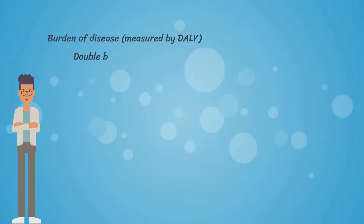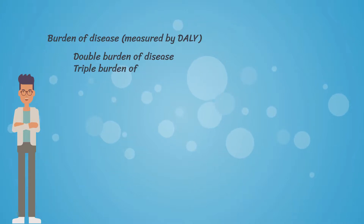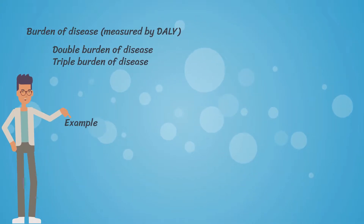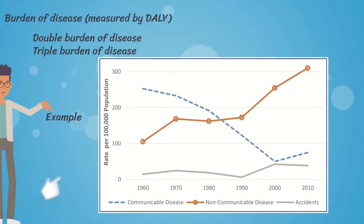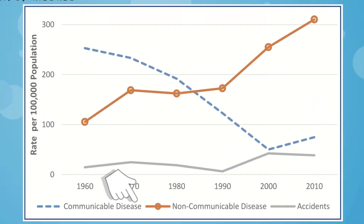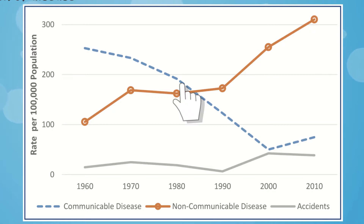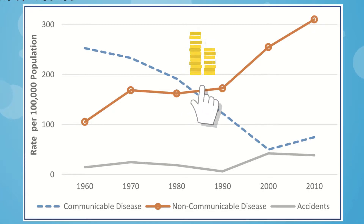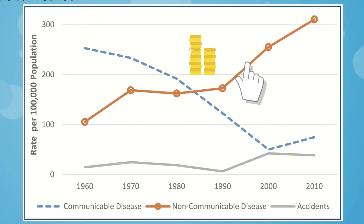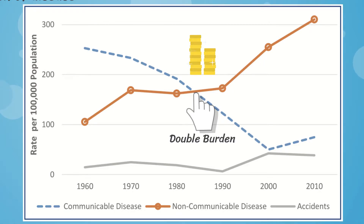You may also hear about double burden of disease or triple burden of disease. In this graph, you can see the trend of communicable and non-communicable diseases, plus accidents, in a developing country in Asia. From 1960 to 1980, communicable diseases were the leading causes of deaths. But after economic growth and urbanization, non-communicable diseases started to increase. At some point, prevalence of both types of diseases were high, and we can call it double burden of diseases.